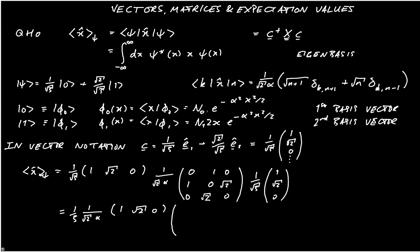And then I'm going to have the result of acting with the matrix on the column vector. So the first entry is the first row 0, 1, 0 multiplying 1, root 2, 0, which gives me root 2. The second entry is 1, 0, root 2 acting on 1, root 2, 0, which gives me 1. And the third entry is 0, root 2, 0 acting on 1, root 2, 0, which is 2.